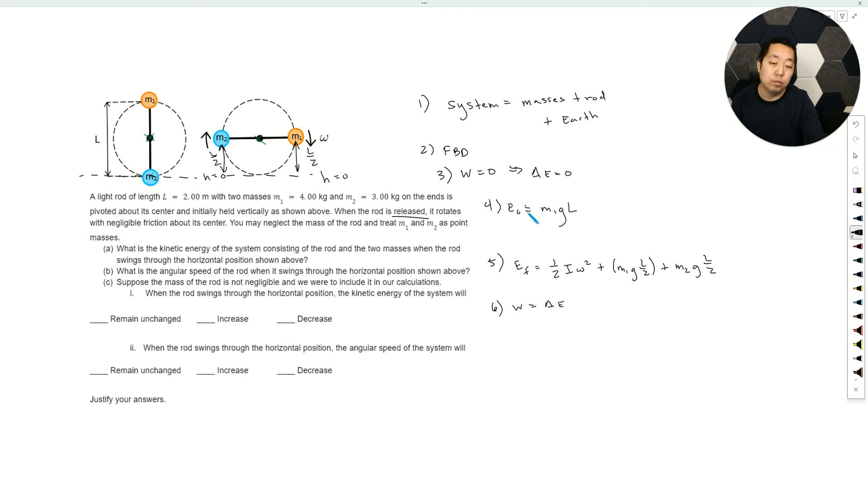Because the work is zero, the change in energy is zero, so these two energies are equal to each other. We could combine this: M1 plus M2 GL over 2. Then you can subtract, so you get one-half I omega squared is going to be the difference here. It's going to be M1 GL minus this, or M1 minus M2 GL over 2. If you distribute and do the math, this is how much kinetic energy we have left.